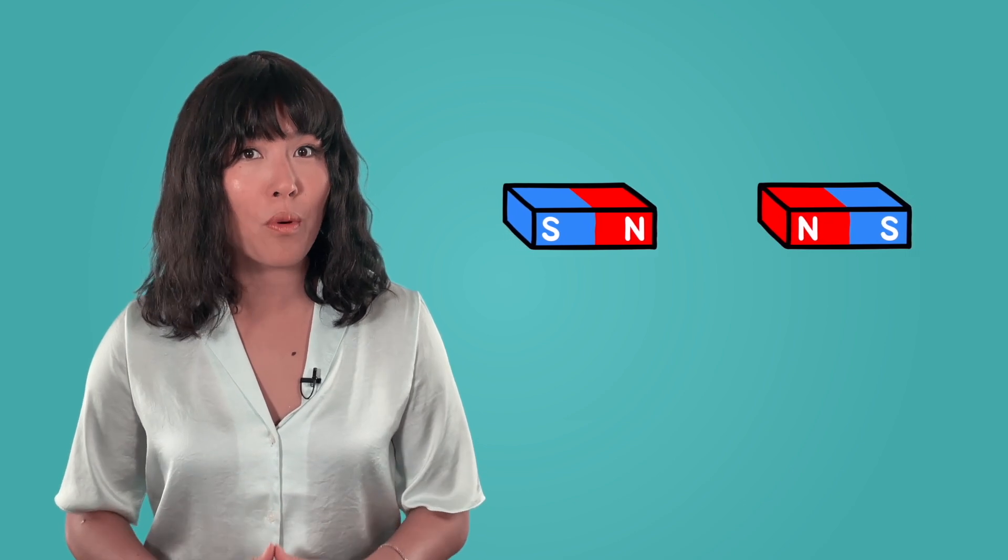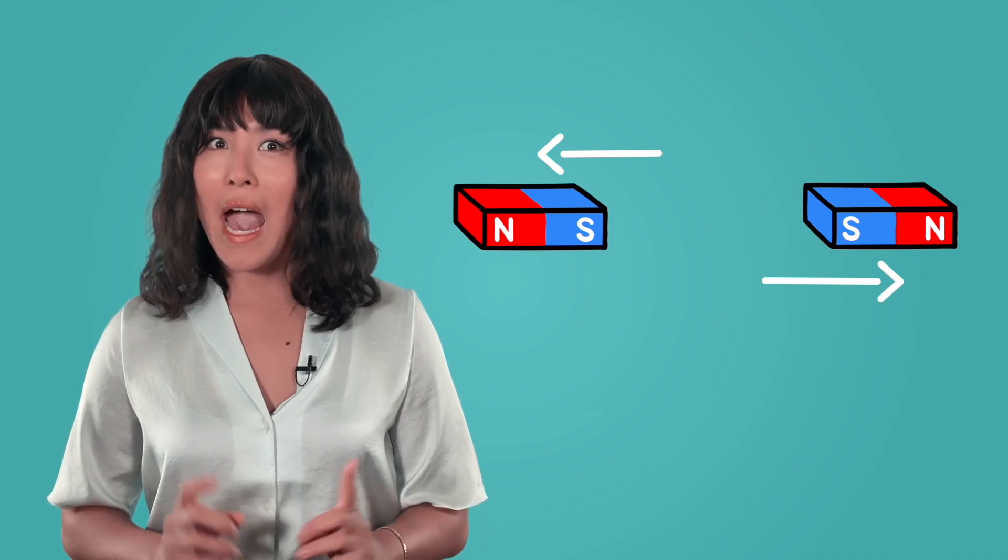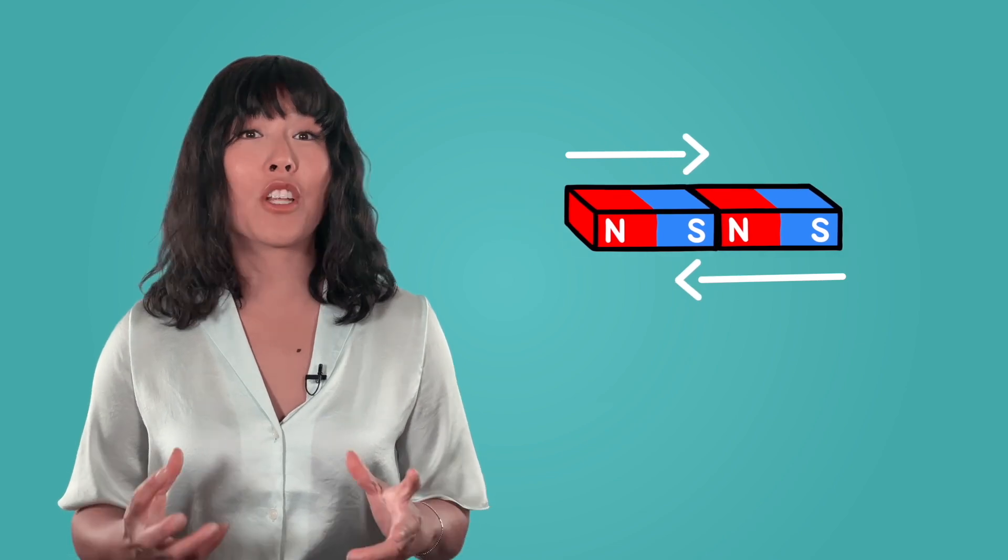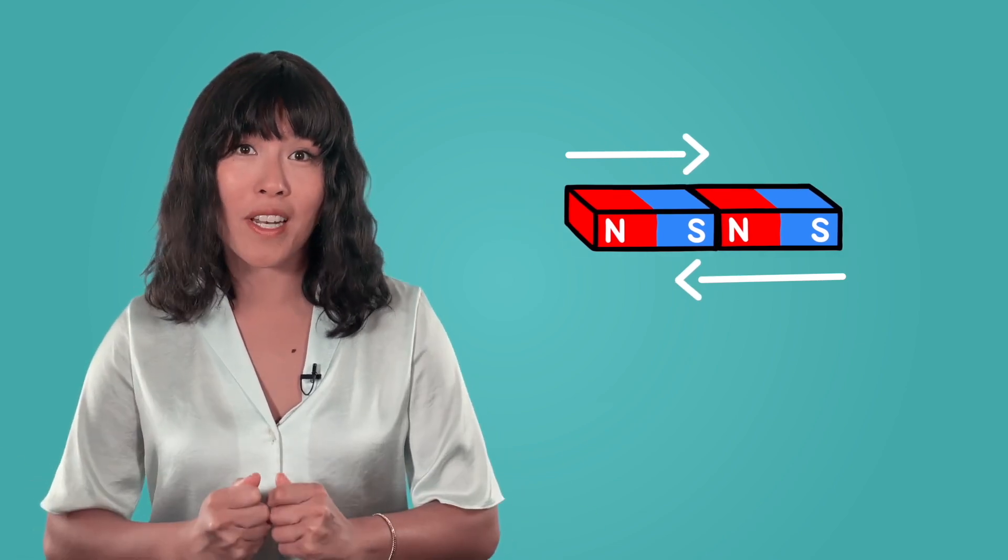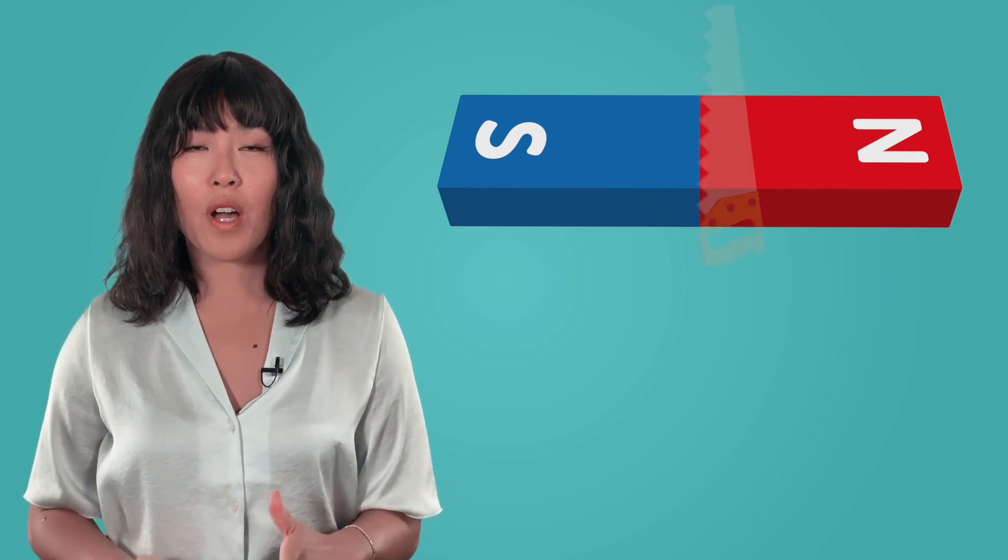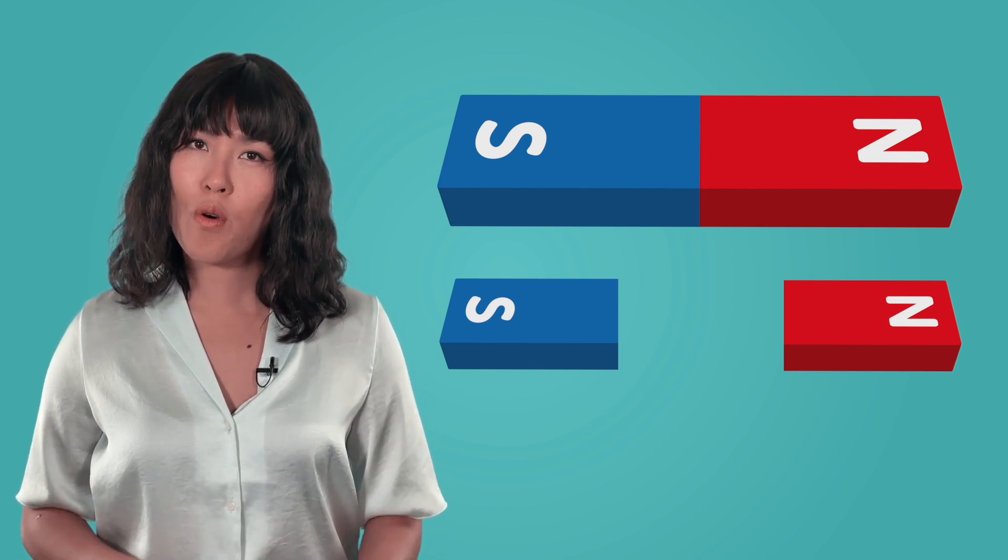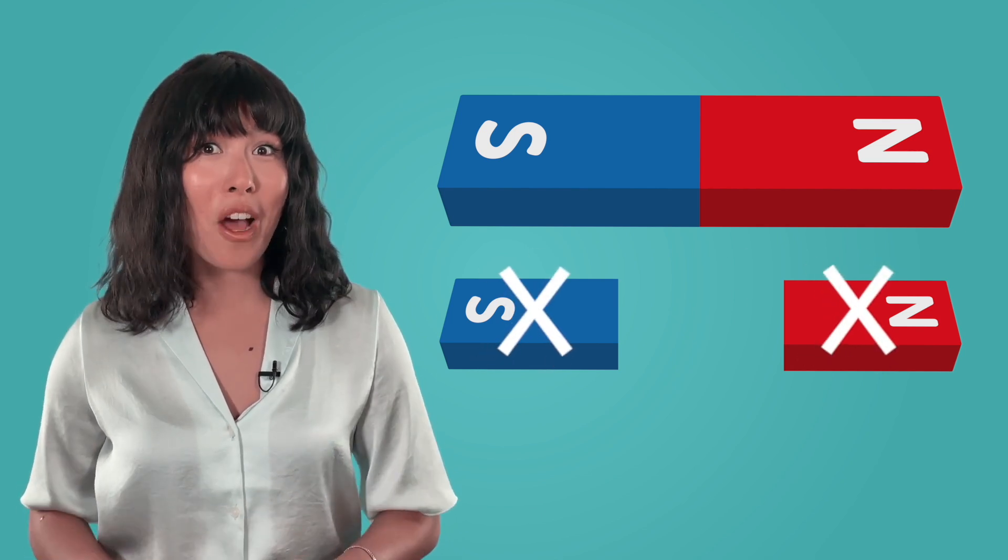If you've spent any time playing with magnets, you probably know that they have a North and South Pole, and you may even know that if you bring two North Poles together, they will repel each other, as will two South Poles. However, bringing a North Pole near a South Pole will cause the magnets to attract and pull toward one another. But have you ever wondered what would happen if you cut a magnet in half? Would one piece be the North Pole and one piece be the South Pole? No, that's not what happens at all.